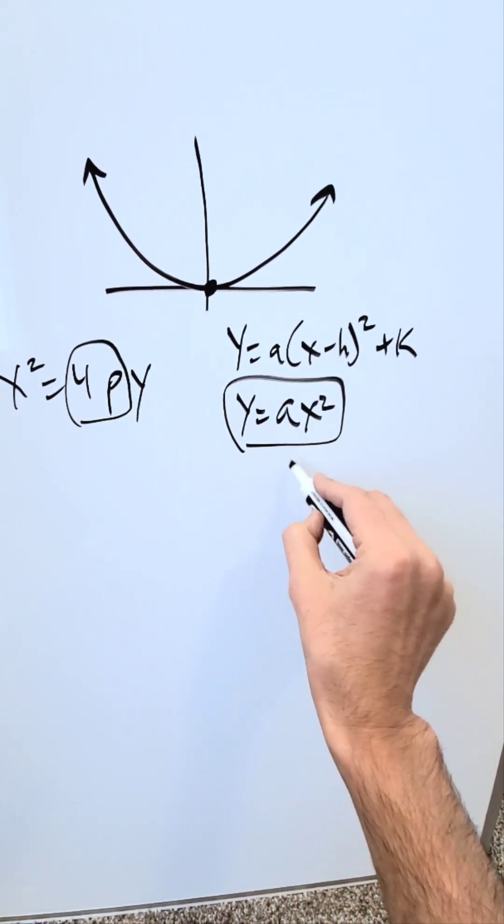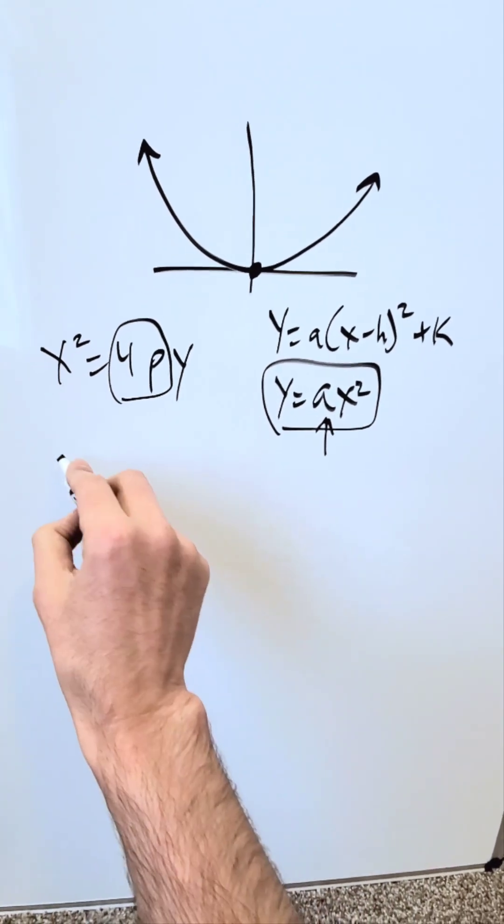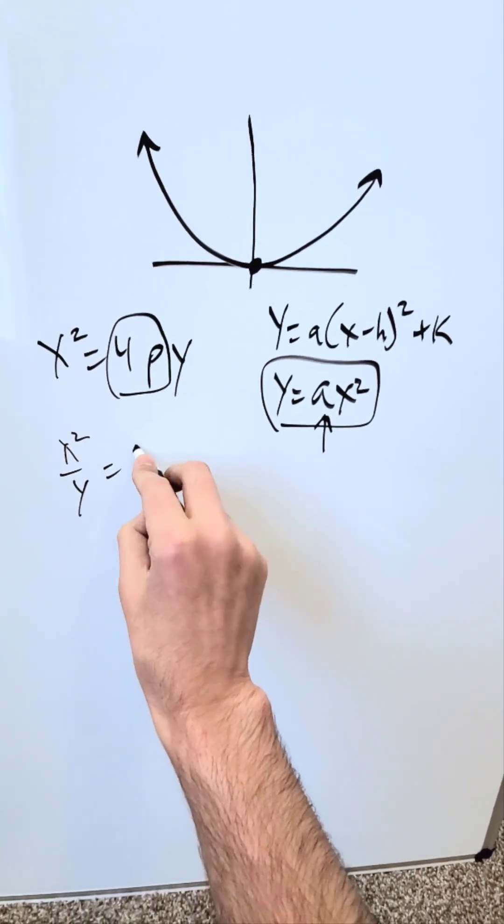How can we relate the 4p and the a? You can. In this particular case, push the y on the other side. You'll have x squared over y equals 4p.